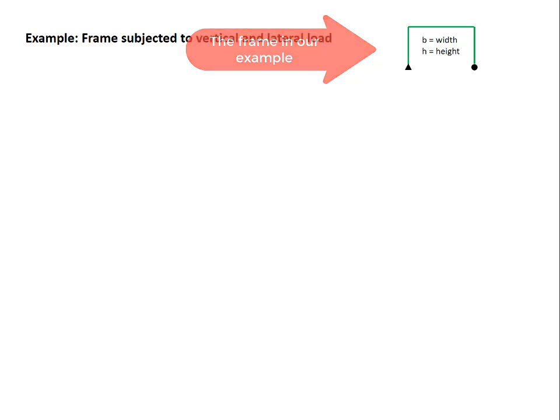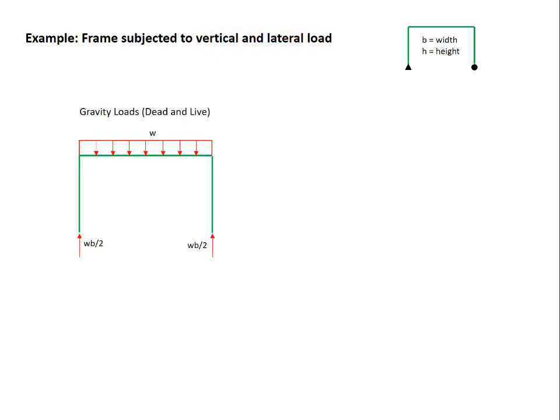Under gravity loads, we'll assume that all the gravity loads are captured by a distributed load W acting over the beam. And if that's the case, the reactions at the pin and at the roller are W times the width B divided by 2. So the load gets split evenly by symmetry.